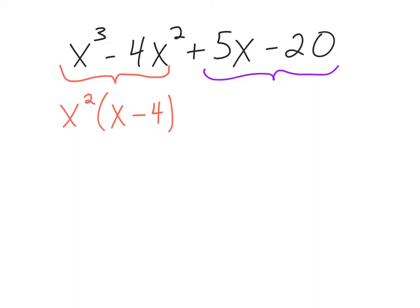Let's go ahead and look at that purple grouping. It looks like I can pull out a five, so I'm going to pull out a positive five. Five times x gets me to five x, and five times negative four is going to get me to that last term of negative 20. What I'm hoping for is to find a common term here.